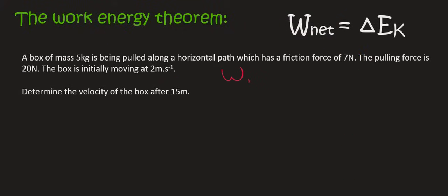So the point is that w net was equal to 195. So now we can use this formula and we can say 195 is equal to change. Now remember, change means final minus initial. So that's ek final minus ek initial.